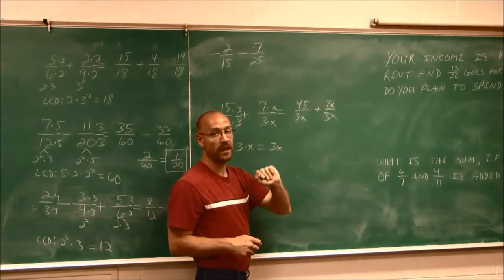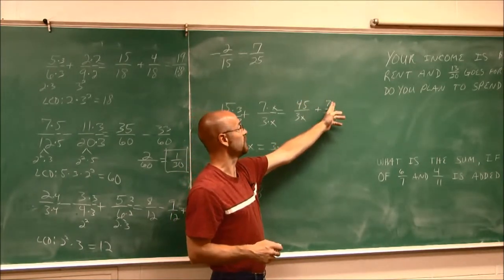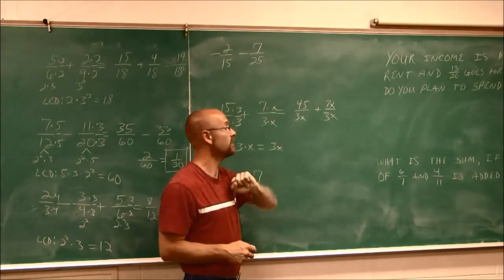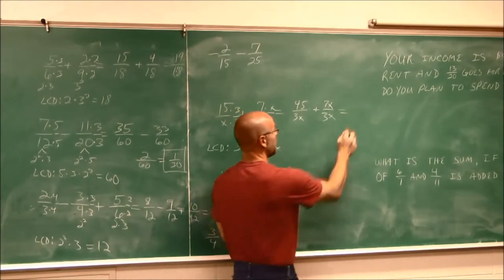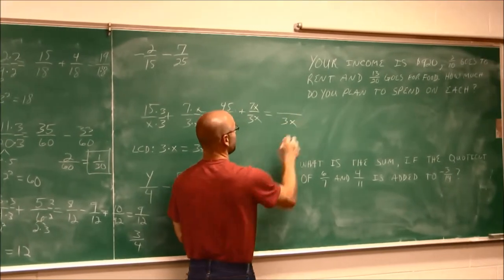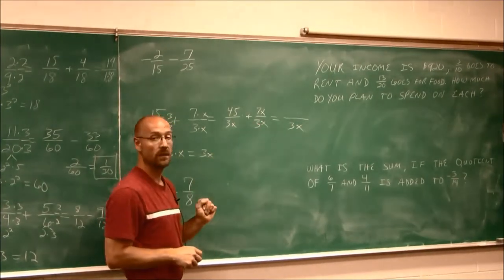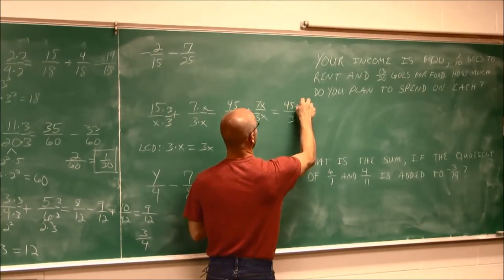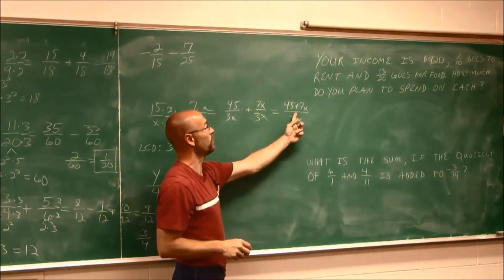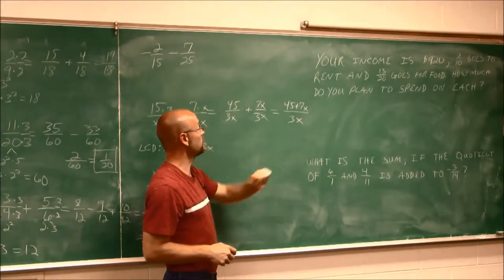But these are not like terms. I can't add 45 and 7x because I don't know what x is. So this is a case because it does have a variable where I just write them over the common denominator. Because both of these are over 3x, so I can write it as such. 45 plus 7x are both over 3x. And that's as far as I can go.